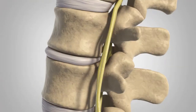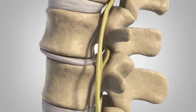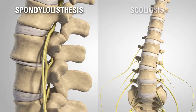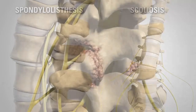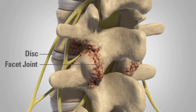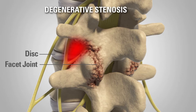With advanced DDD, the loss of disc height can lead to segmental instability, resulting in degenerative spondylolisthesis, or asymmetric disc height loss, resulting in degenerative scoliosis. The advanced degenerative changes affecting the discs, facet joints, and surrounding soft tissues can result in foraminal or canal narrowing, also known as degenerative stenosis.